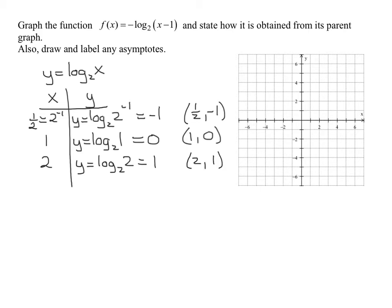If I wanted to graph any more accurate points, I'd pick other x values that are powers of 2. So 4, which is 2 squared, or 8, which is 2 cubed. But remember, the values of x I put in for my parent graph have to be positive. Because what is the domain of log to the base 2 of x? It's all positive real numbers.